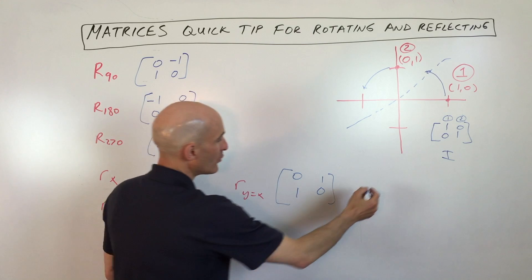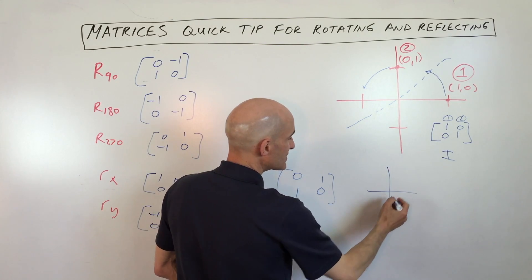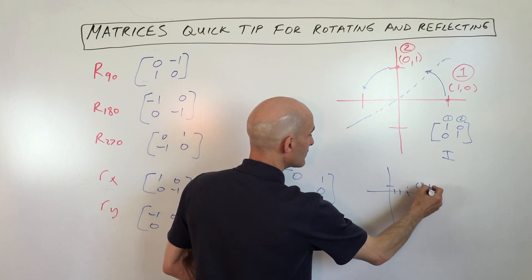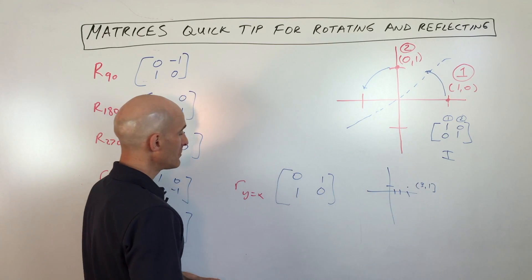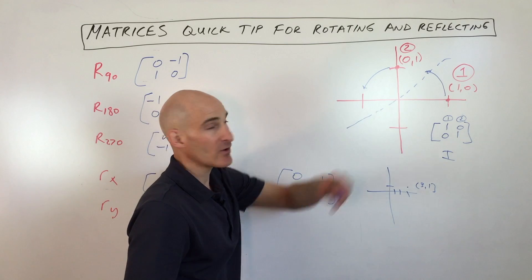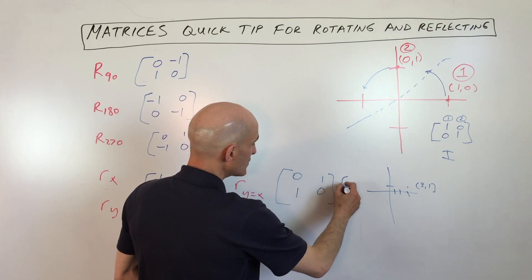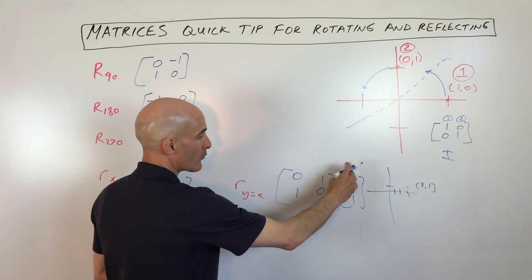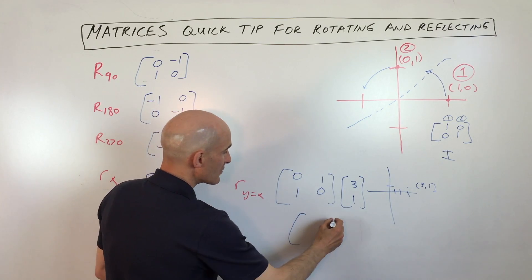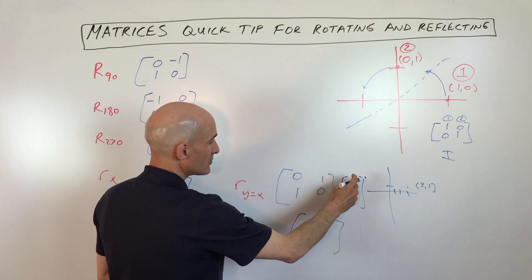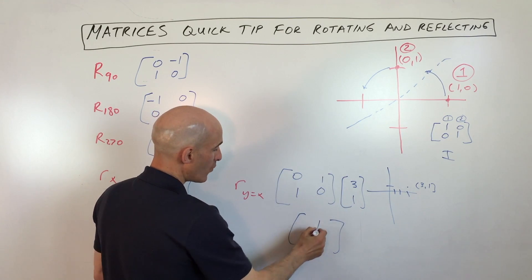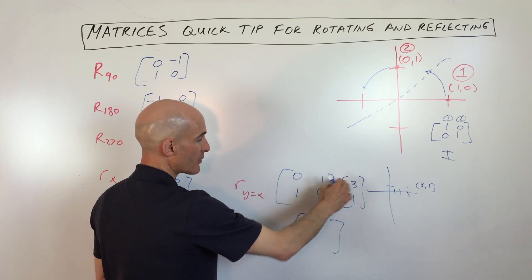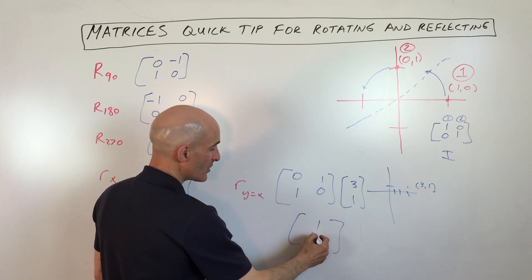And just to give you a quick example, say for example, you just want to take a point three, one, like this. And you want to reflect it over the line y equals x. Well, all you would have to do is multiply this matrix times the point three, one. And you multiply rows times columns. So that gives you what? Zero times three is zero. One times one is one. And we add those together. And then the second row, first column, you get three plus zero, which is three.